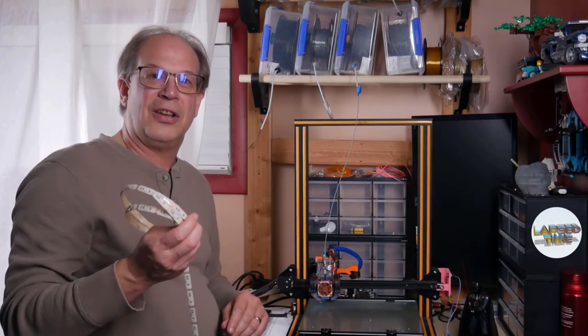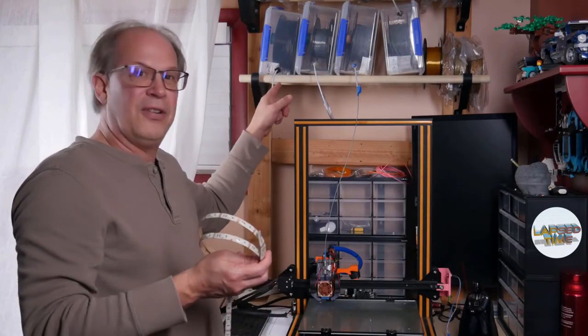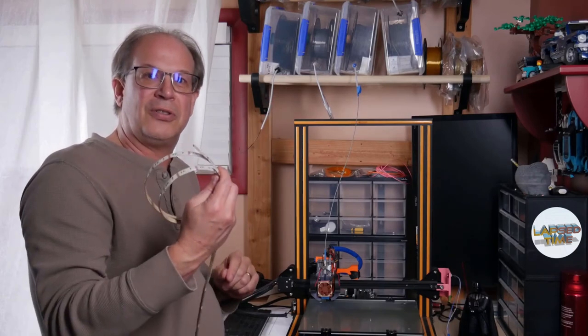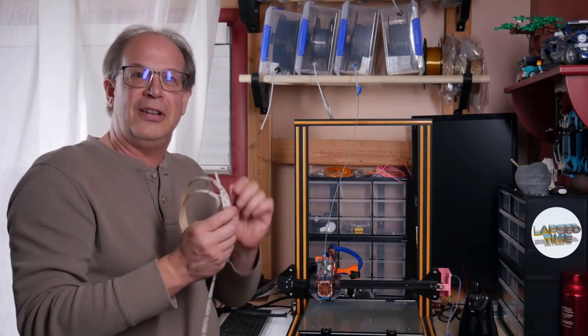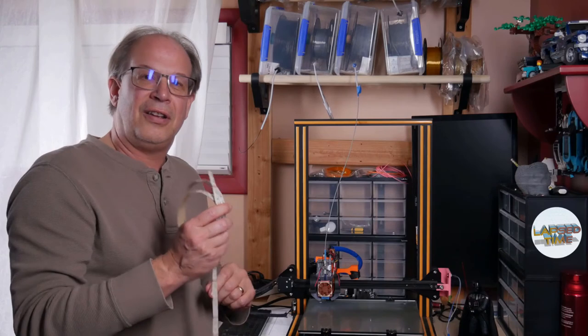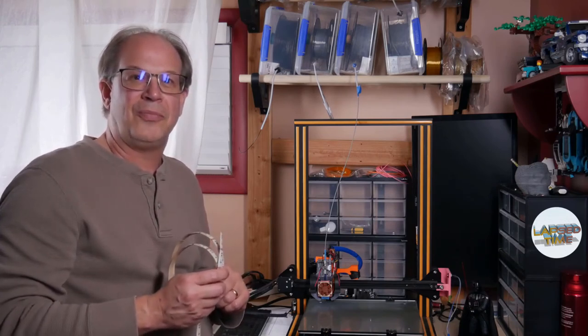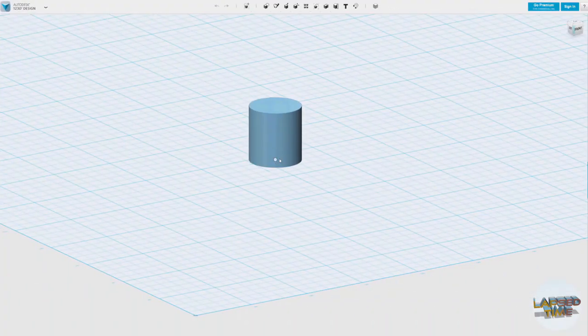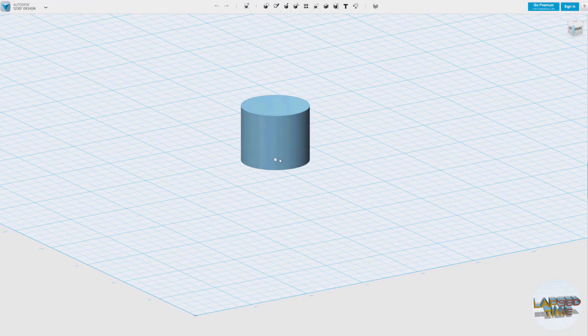So we're going to take, do our measurements of the wooden dowels, do the measurements of our LED lights. And we're going to go create the model. This should be a very simple object, quick and easy to create.